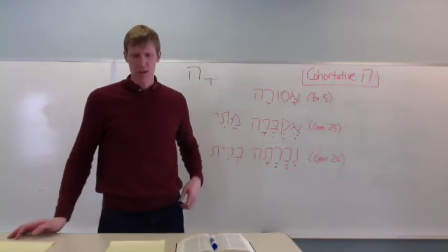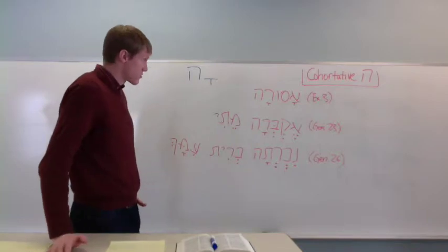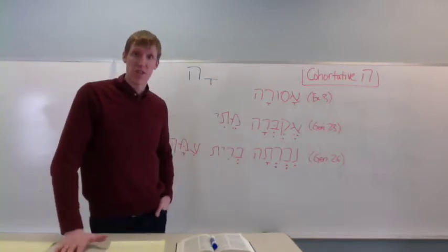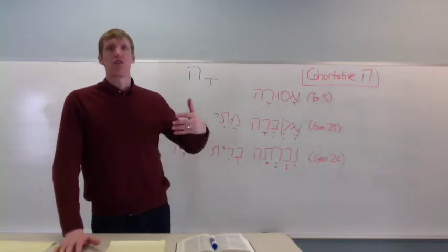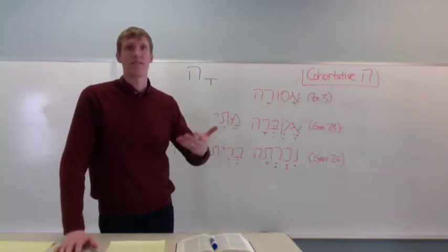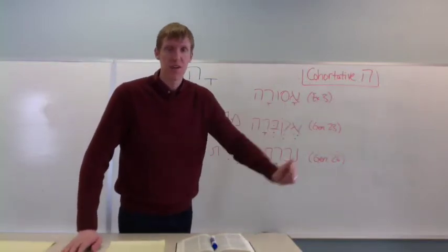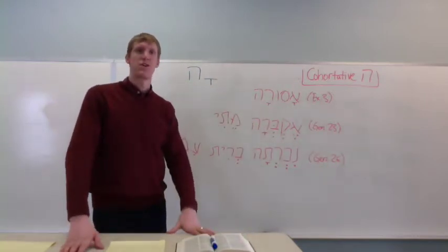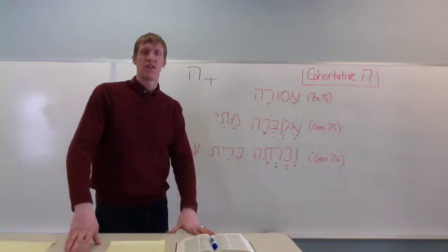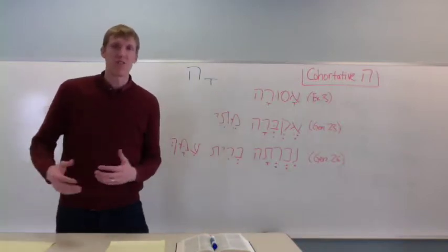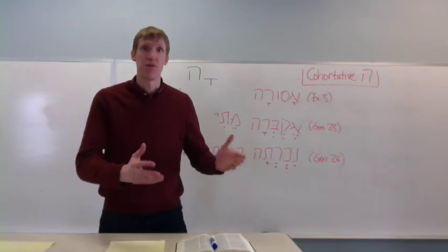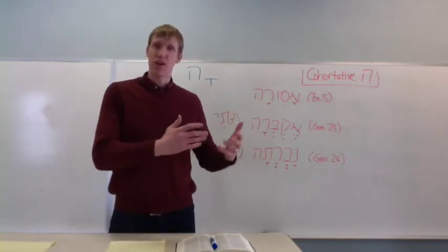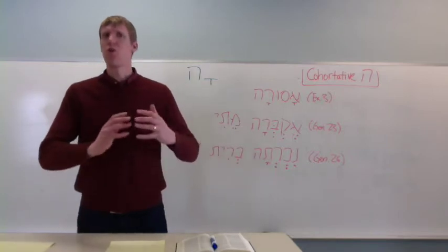What it does, the way that you translate it, is that you would add, generally, the word let. So, let me do something or let us do something. In Genesis 11, the Tower of Babel, all the people gather together and they say, let's brick bricks. Let us brick bricks or make bricks. That's a cohortative.